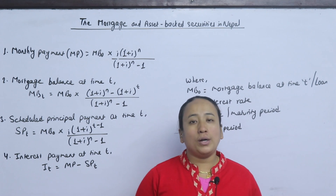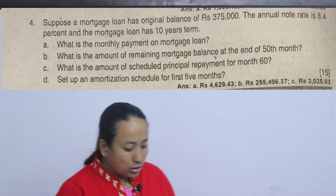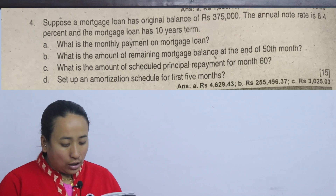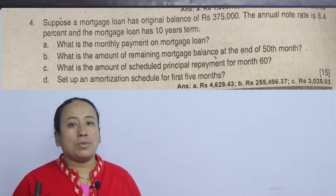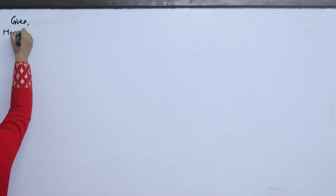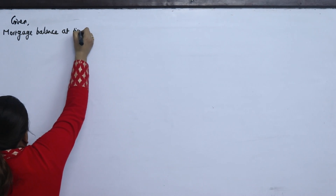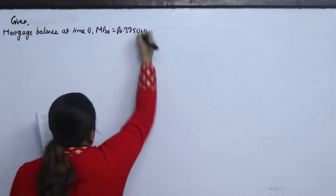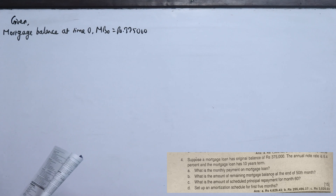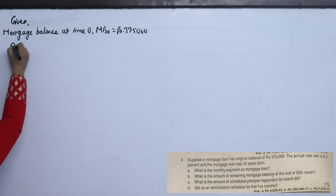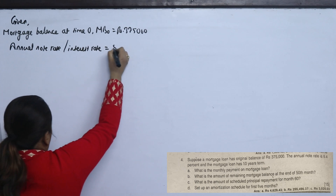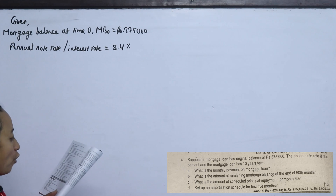Now I will explain with a numerical example. Suppose a mortgage loan has an original balance of Rs. 3,75,000. The loan value is Rs. 3,75,000, and we denote this as MB0. So the mortgage balance at time 0, MB0, equals Rs. 3,75,000. This is the loan amount. The annual note rate is 8.4%, which is the interest rate.